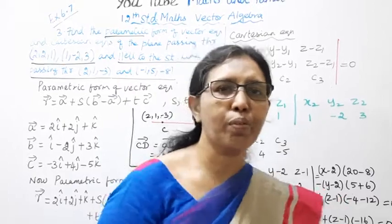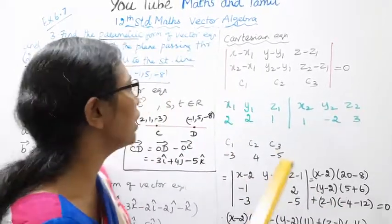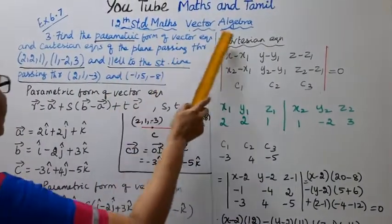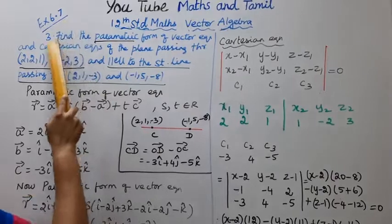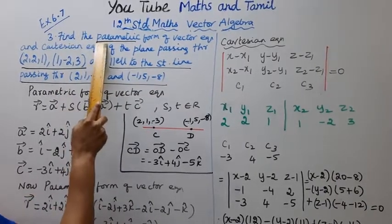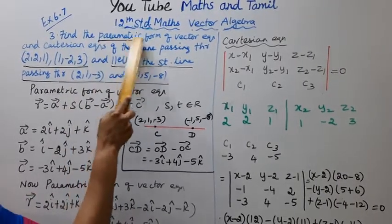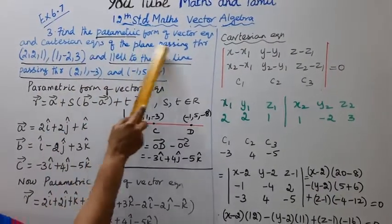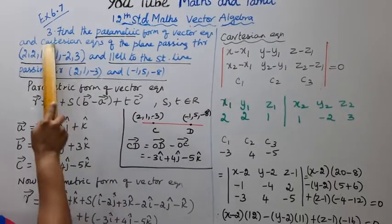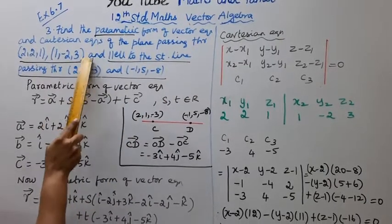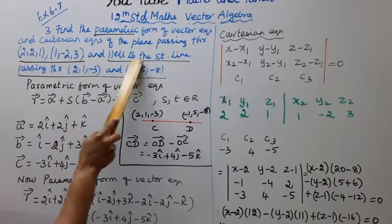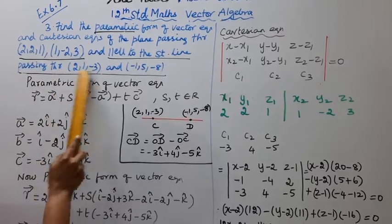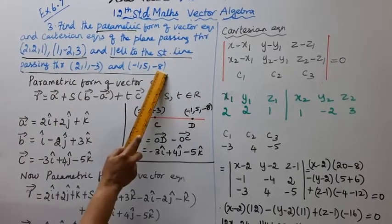Hello students, welcome to Max and Tamil channel. 12th standard vector algebra exercise 6.7 third problem. Find the parametric form of vector equation and Cartesian equation of the plane passing through 2 points and parallel to the straight line passing through these 2 points.